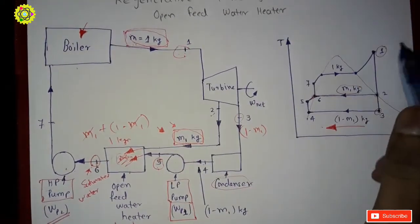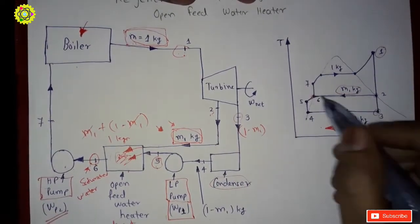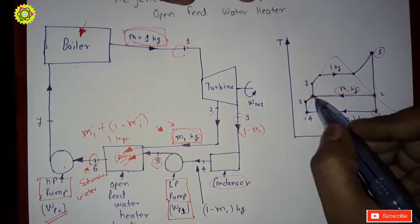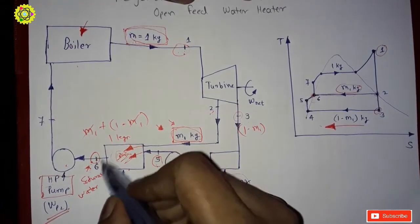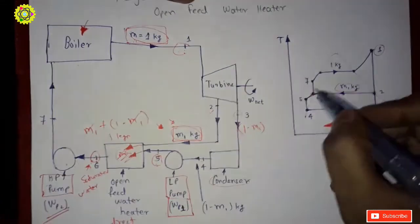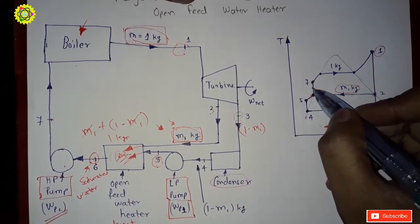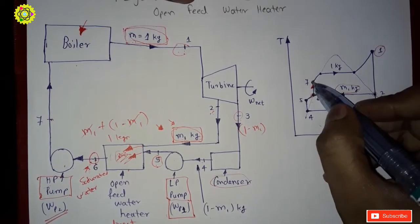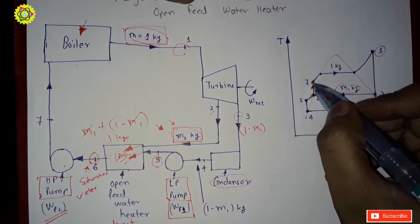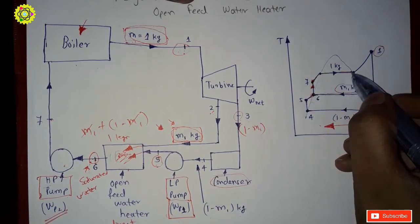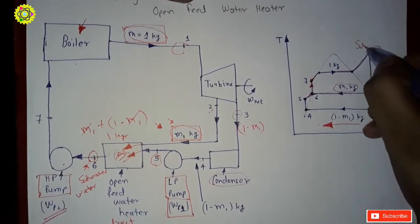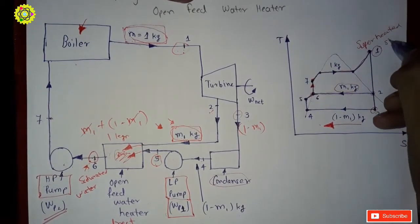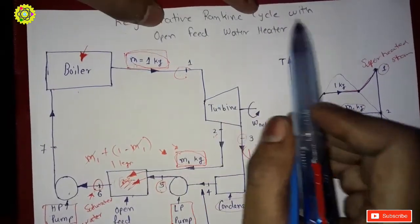Looking at the T-S graph: the saturated water is pumped to boiler pressure at State 7 — that is the pumping process. Then this saturated liquid inside the boiler is heated all the way up to State 1, which is the superheated steam. We have now learned how the regenerative Rankine cycle with open feed water heater works. Thank you friends for watching — please like, share, comment, and subscribe to my channel.